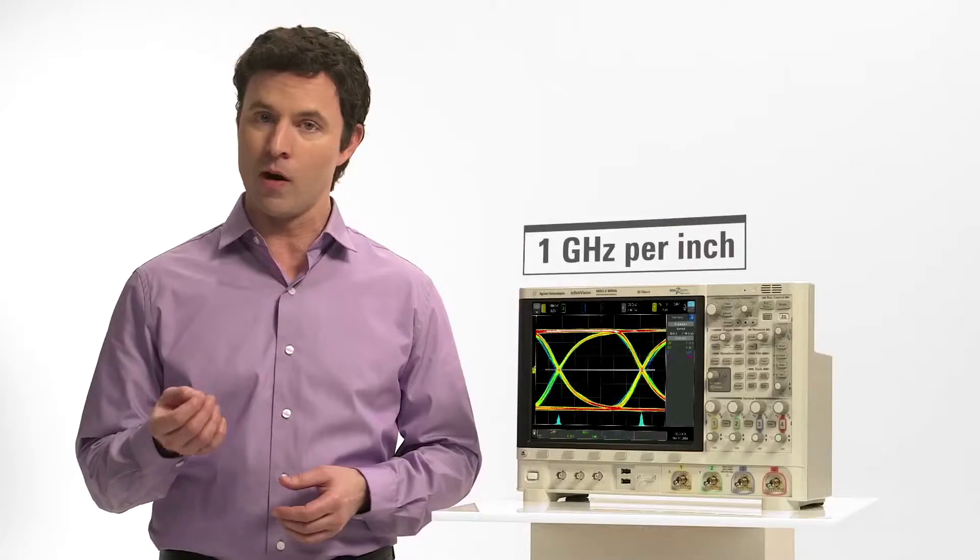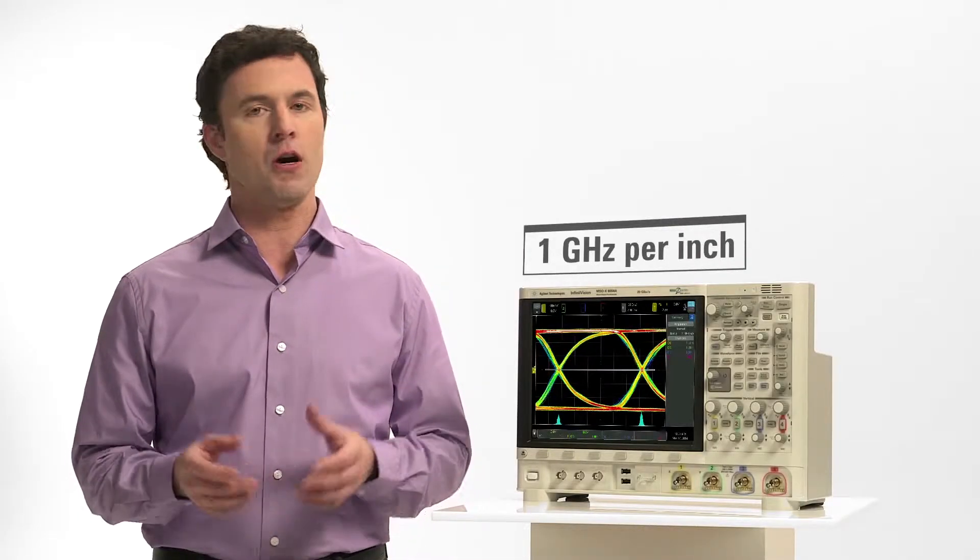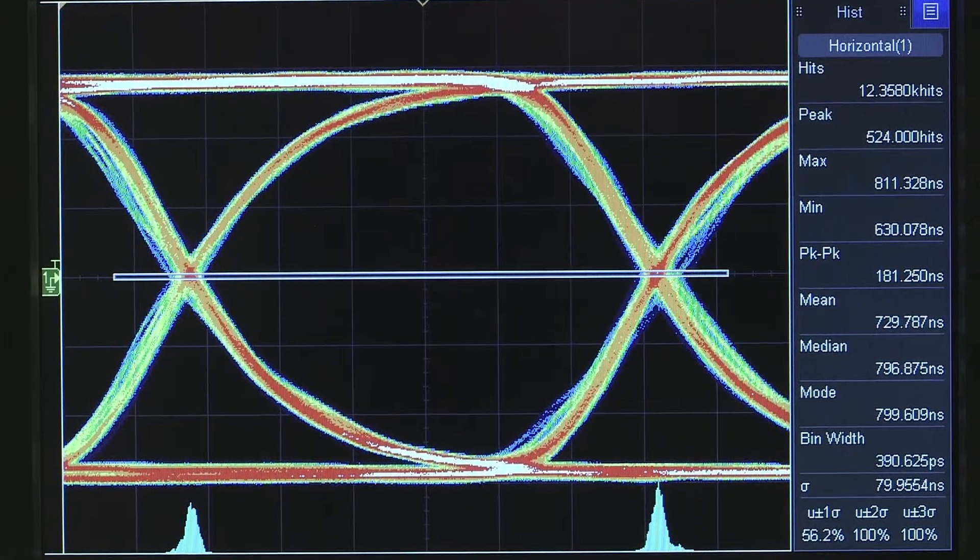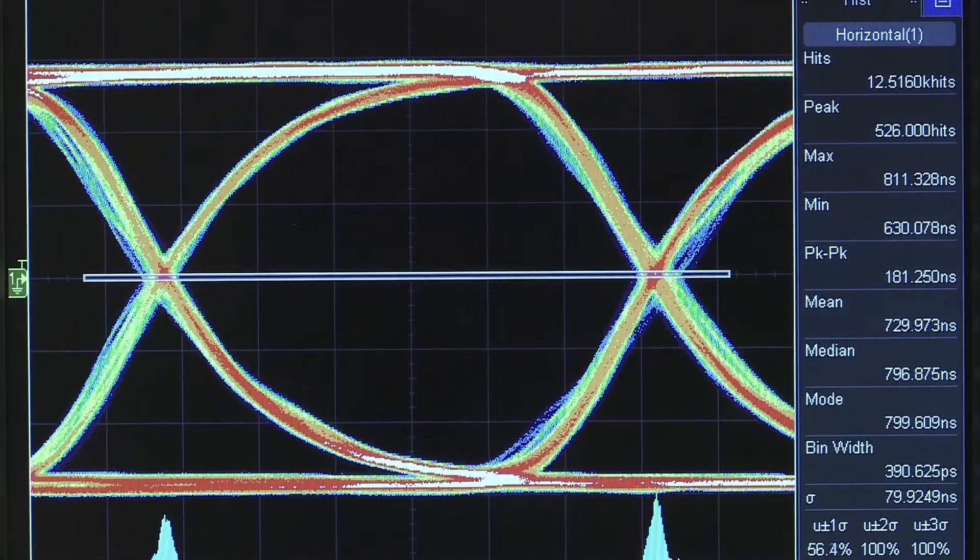In terms of bandwidth, that's 1 GHz per inch. No other oscilloscope in this class comes close. The 6000X-Series offers unmatched signal visualization as well.